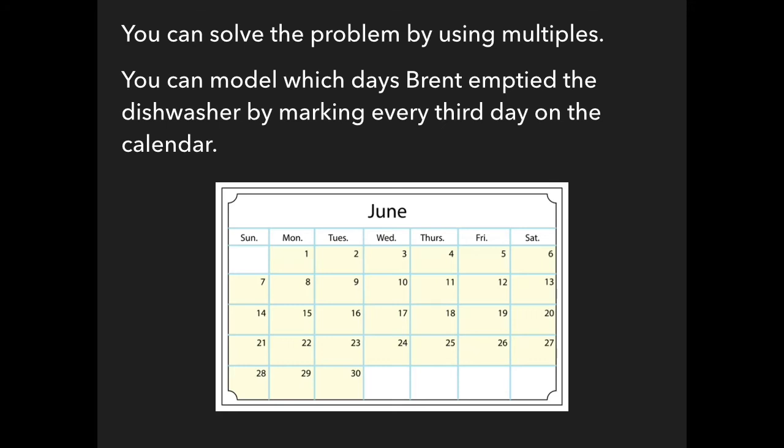You can solve the problem by using multiples. You can model which days Brent emptied the dishwasher by marking every 3rd day on the calendar.